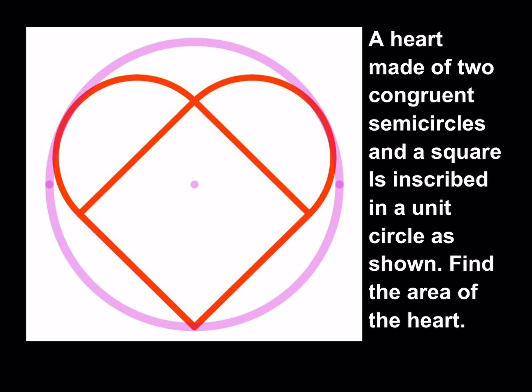This puzzle was suggested by one of my subscribers, Human, about a month ago. Thank you, Human, for the suggestion. Today is a special day and here's a special puzzle for you. A heart made of two congruent semicircles and a square is inscribed in a unit circle as shown. Find the area of the heart.